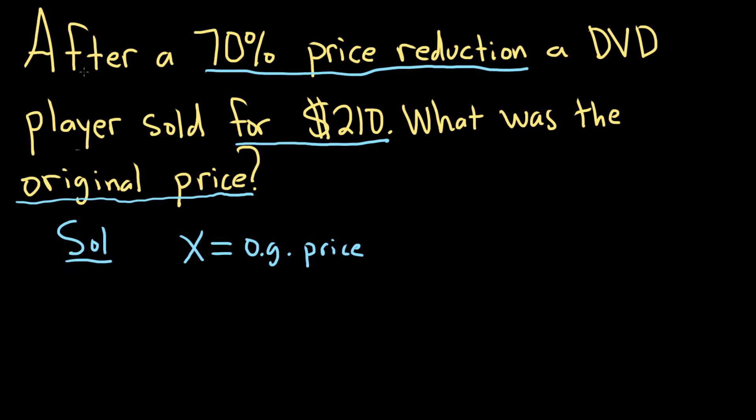So first, let's do the hard part. It sells at a 70% price reduction. That means we're selling it for the original price, which is X, minus 70% of the original price. So minus 0.70 of the original price, so times X. So it's the original price minus 70% of the original price. Because 'of' means multiplying in mathematics.